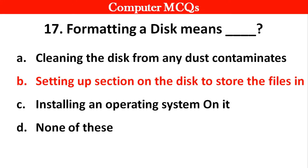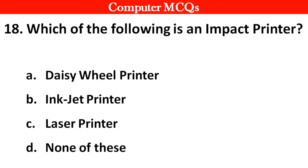Next question: Which of the following is an impact printer? Options: A. Daisy wheel printer, B. Inkjet printer, C. Laser printer, D. None of these. Right answer is option A — Daisy wheel printer.